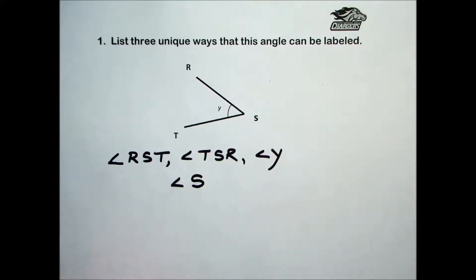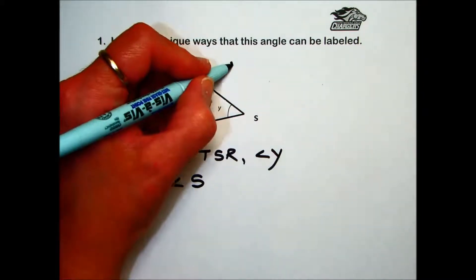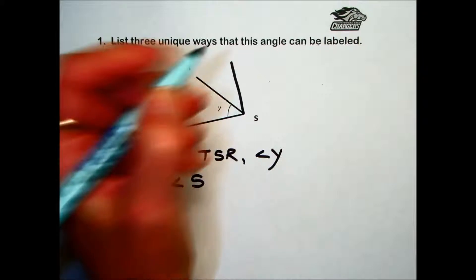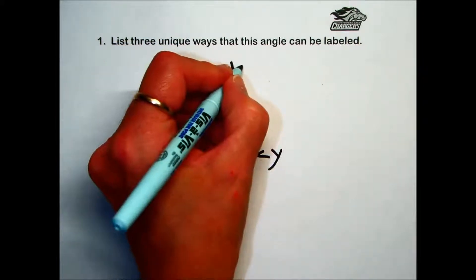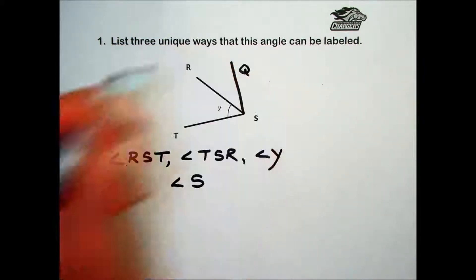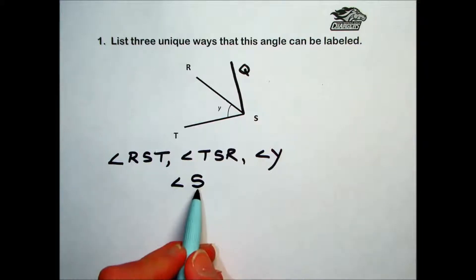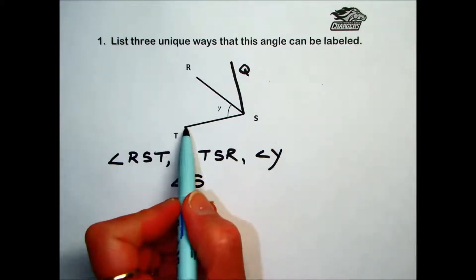In the event we had a more complex diagram, say we had a side coming down here with this being Q, then listing angle S would bring some confusion to this diagram, not knowing whether we were talking about this smaller acute angle, this smaller acute angle, or the two together.